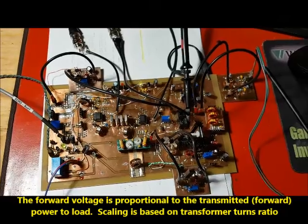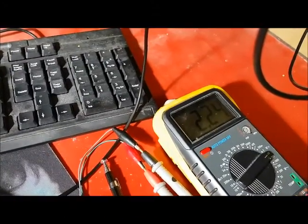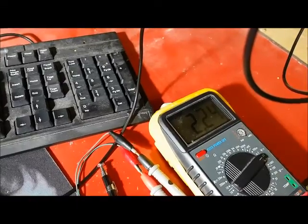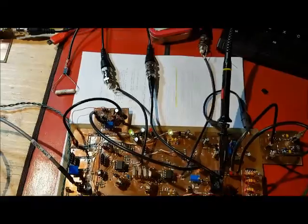The voltmeter is now connected to the forward port, and we're seeing 2.24 volts for the forward port for a 50 ohm load.